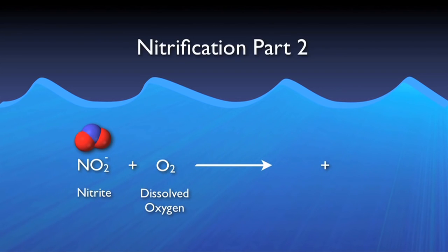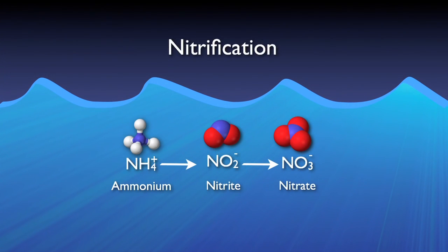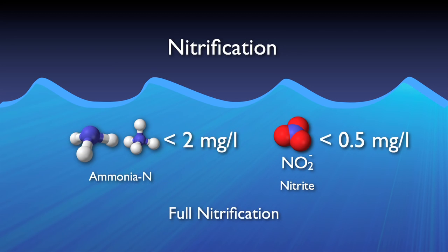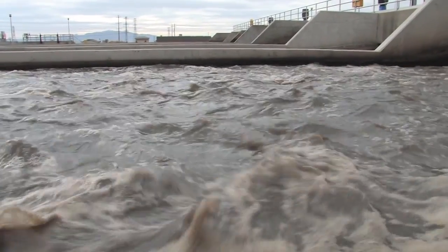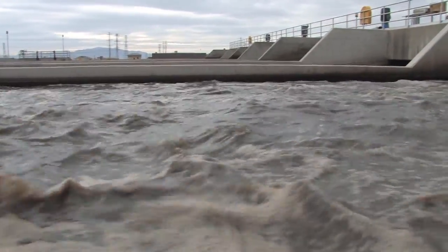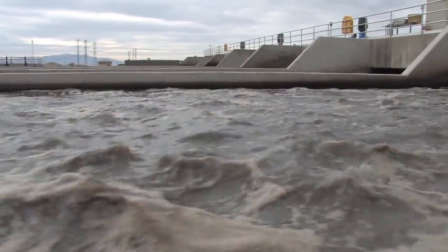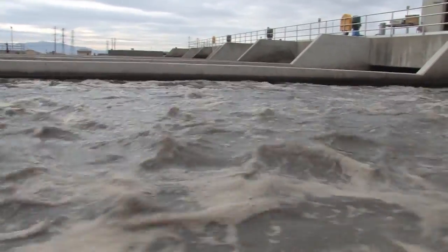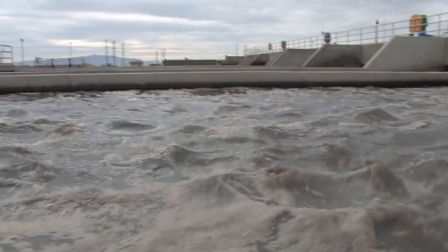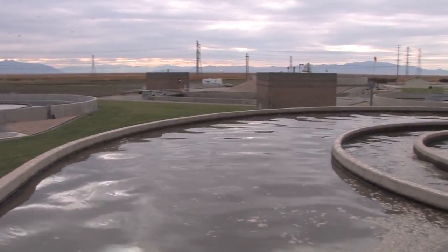The second step, for which a group of bugs known as nitrite oxidizers is largely responsible, takes that nitrite and more DO and converts it into nitrate and energy. This conversion from ammonia to nitrate is nitrification. Typically, full nitrification is observed when ammonia concentrations are reduced to less than 2 mg per liter and nitrite concentrations to less than 0.5 mg per liter. Nitrification is a very oxygen-hungry process. To remove 1 pound of BOD, 1.2 pounds of oxygen are required; however, to reduce 1 pound of ammonia to nitrate, 4.6 pounds of oxygen are required.